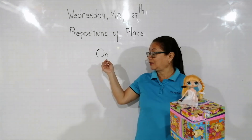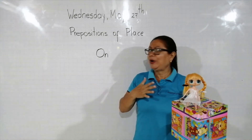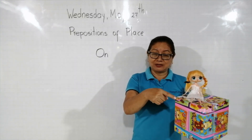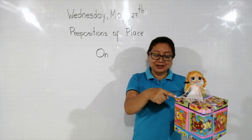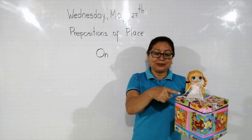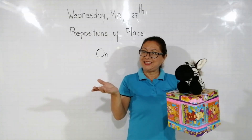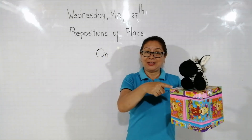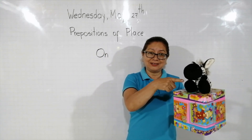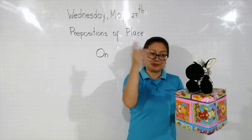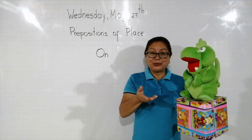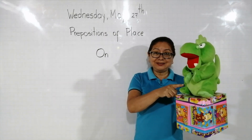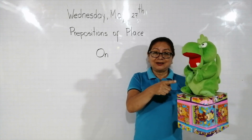Repeat: on. Where is the door? It's on the box. The door is on the box. Where is the zebra? The zebra is on the box. Where is Mr. Dragon? He is on the box.